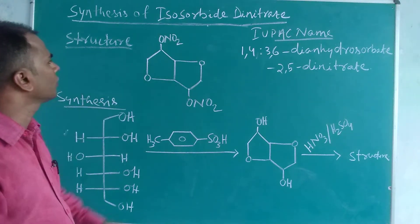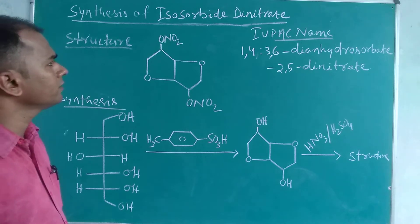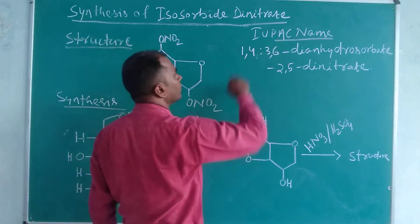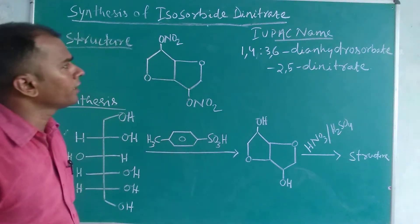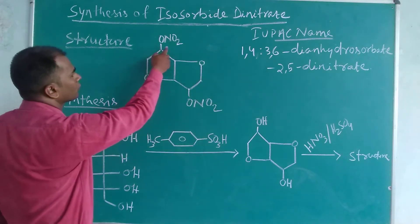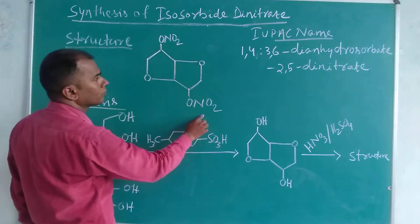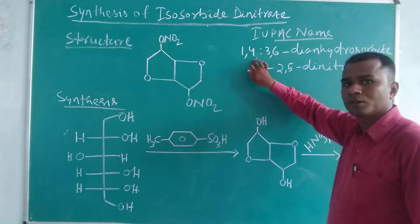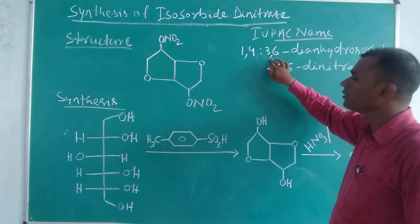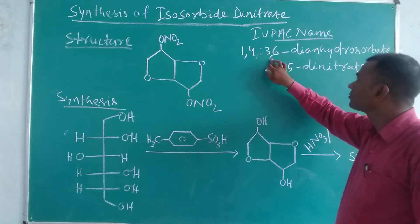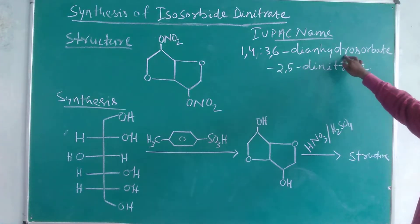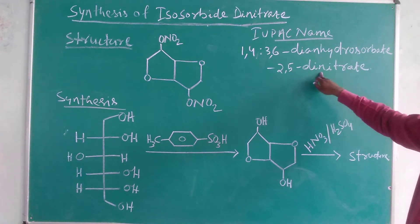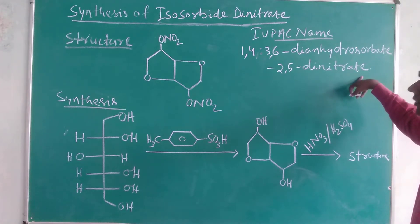This is the structure of isosorbide dinitrate. This is the IUPAC name of isosorbide dinitrate: 1,4:3,6-dianhydrosorbitol-2,5-dinitrate.